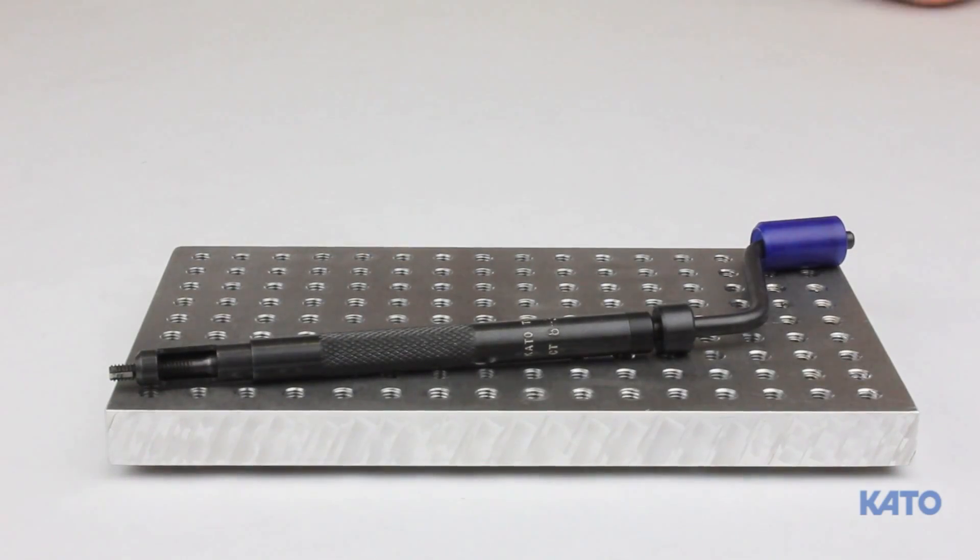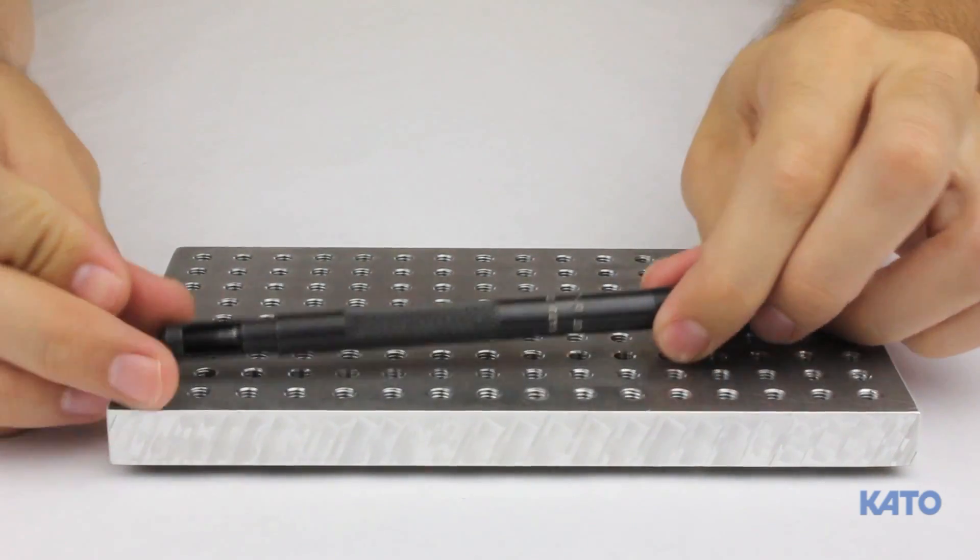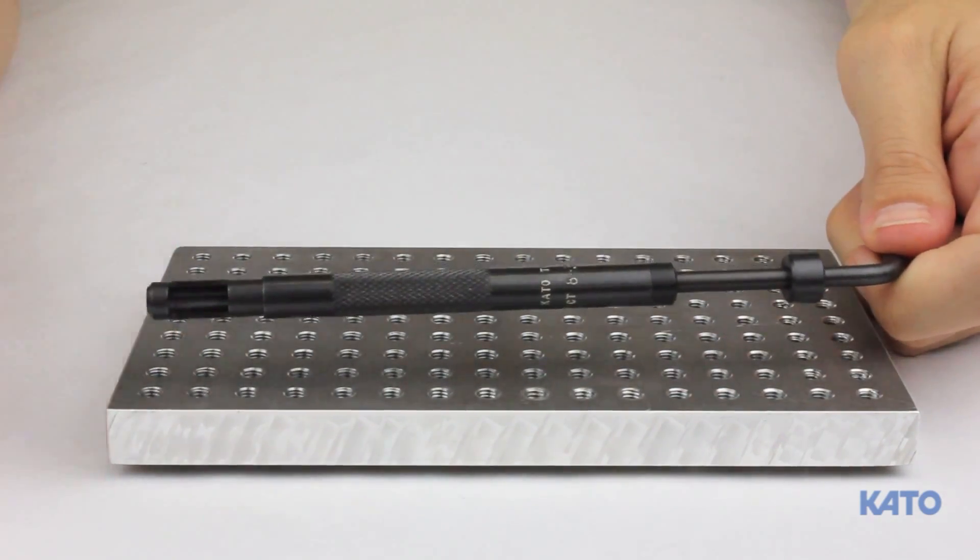With the installation depth now set, we are ready to install an insert. Slide the mandrel back into the pre-winder sleeve. Drop the insert into the well.